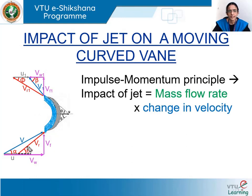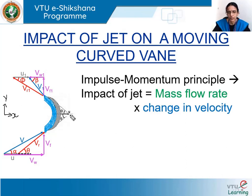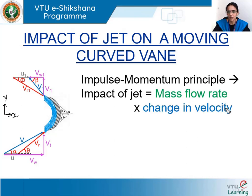For the case of a curved vane where the jet enters tangentially and the vane moves with velocity u along the positive x direction — which is always taken as the direction of movement of the vane, with y perpendicular to that — the impact of the jet on the vane is calculated by applying the impulse-momentum principle. According to that, the impulsive force equals mass flow rate multiplied by change in velocity: along x, it is mass flow rate × change in velocity in x; along y, it is mass flow rate × change in velocity in y.